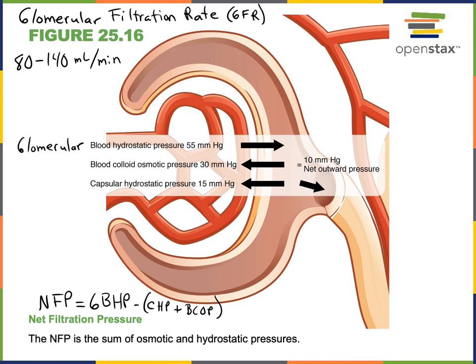There is a higher concentration of solute in the blood within the glomerular capillary because large proteins and formed elements remain in the blood during filtration. The filtrate therefore has a lower solute concentration compared to blood, so the blood colloidal osmotic pressure opposes net filtration pressure. Similarly, the capsular hydrostatic pressure — the hydrostatic pressure of the filtrate within Bowman's capsule — also opposes filtration. The primary force promoting filtration is the glomerular blood hydrostatic pressure.